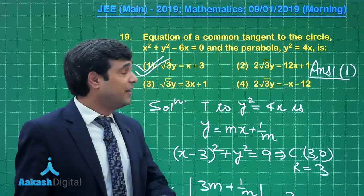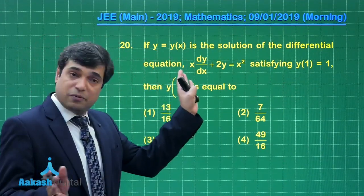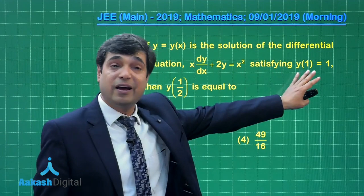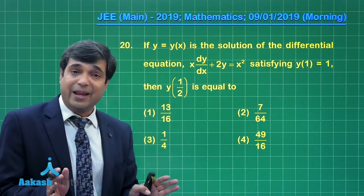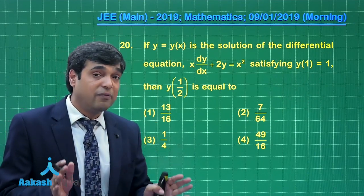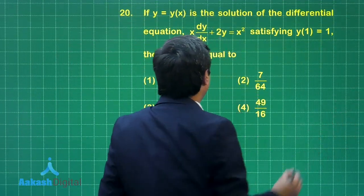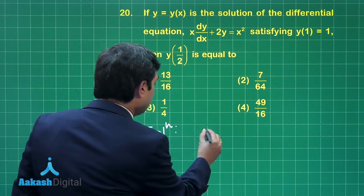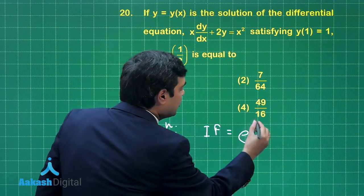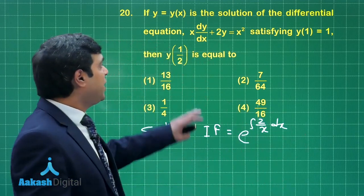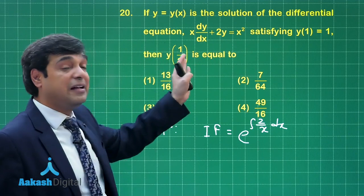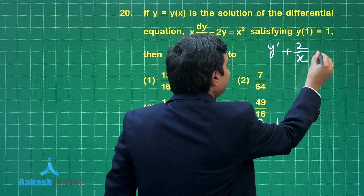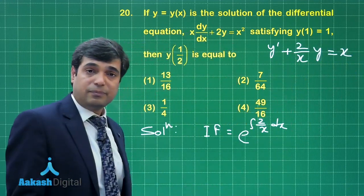Let us move on to the next one, that is question number 20. If y = y(x) is the solution of the differential equation, one equation is given and initial value condition also mentioned. We have to find the value of y at x = 1/2, equation involving differential coefficients. We can see this differential equation can be simplified using integrating factor. Let us write down. Integrating factor is e^(∫2/x dx). We have divided this equation by x and written it as linear differential equation, meaning we have rewritten it as y' + (2/x)y = x. This is clear.